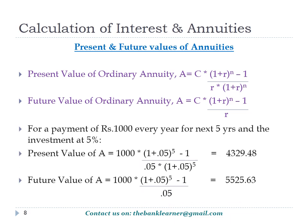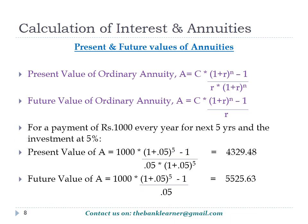Let's calculate for a payment of Rs. 1,000 for 5 years at 5% rate. Using the formula, we get the present value as Rs. 4,329.48 and future value as Rs. 5,525.63. This shows that the present value of Rs. 5,000 invested for 5 years at 5% is Rs. 4,329.48, while after the next 5 years such an investment fetches Rs. 5,525.63.